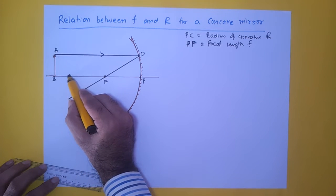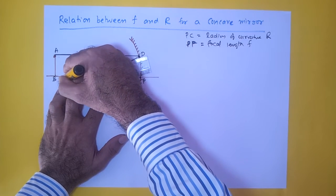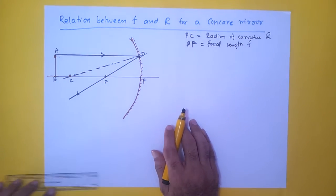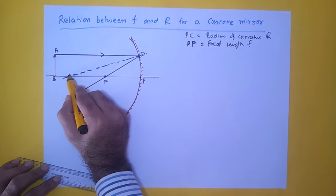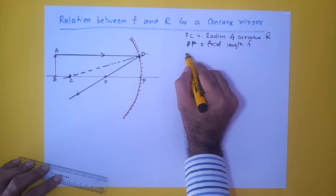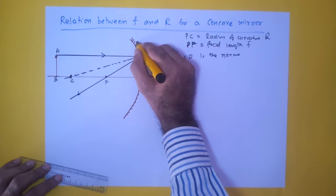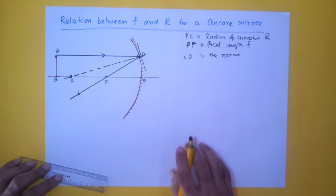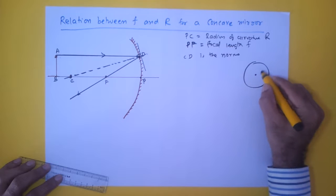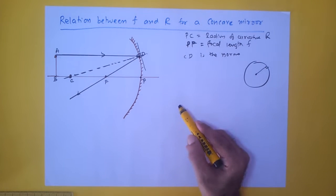Now I draw an imaginary line joining the center of curvature C to point D, the point of incidence. This mirror is part of a sphere, so the line joining the center of curvature to any point on the surface is perpendicular to the surface at that point — it is normal to the surface. Therefore CD serves as the normal.